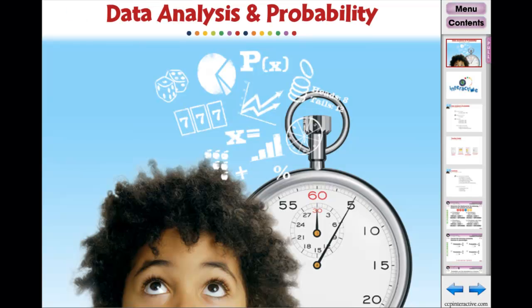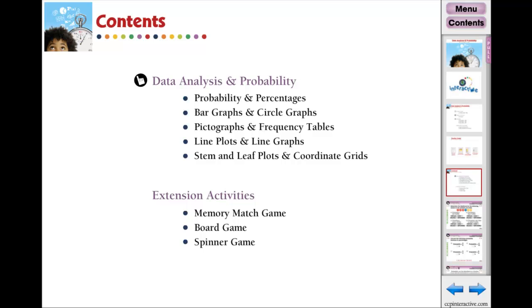Data Analysis and Probability, the fifth of five interactive digital lesson plans in the Five Strands of Math series. Our 80-screen page interactive lesson features comprehensive interactive activities written to the NCTM, Common Core, and STEM Standards.